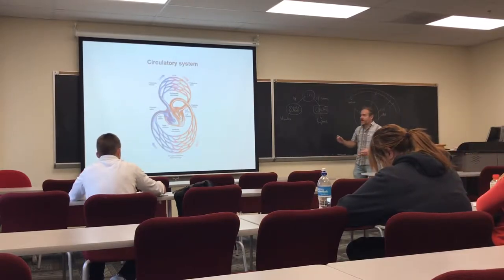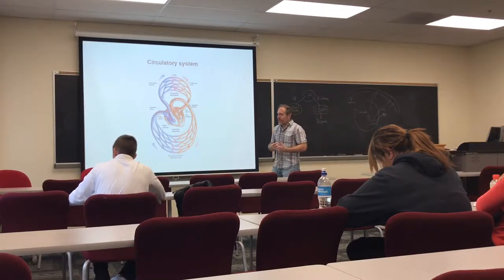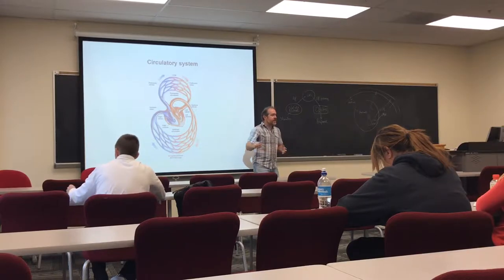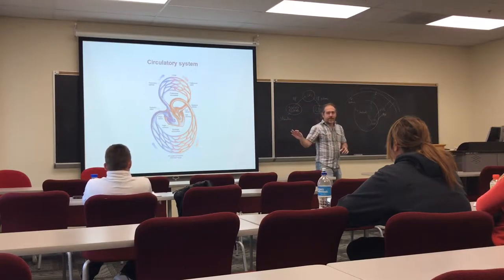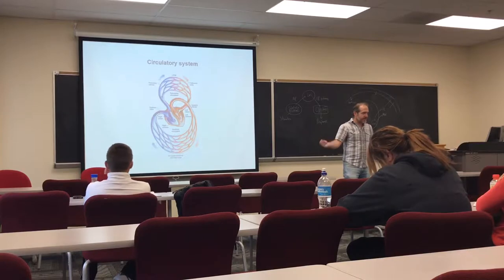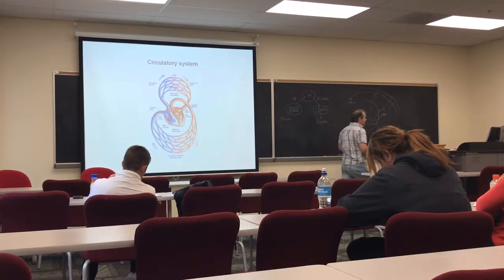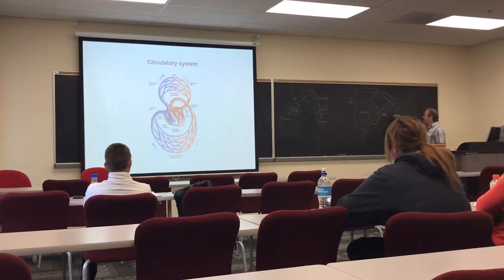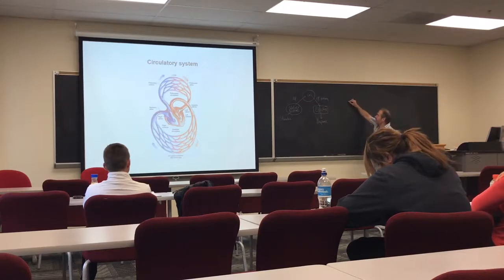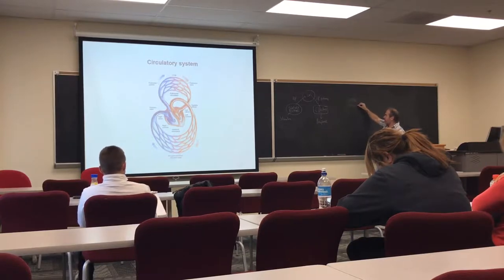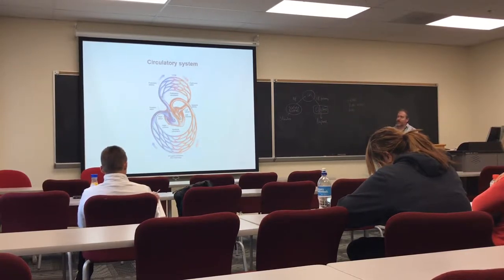I am going to start with the circulatory system, and I am going to talk about the anatomy of both the circulatory and respiratory systems for five to ten minutes. Most of you probably already know about the anatomy of the circulatory system. The circulatory system is formed by three elements: the heart, the blood vessels, and blood.